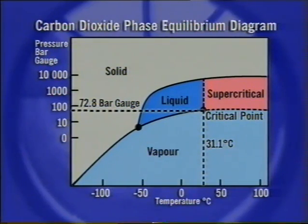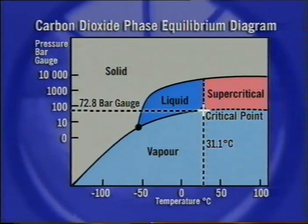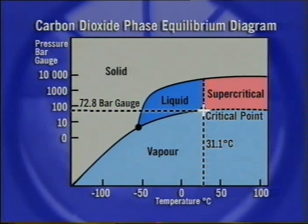The critical point is the combination of pressure and temperature at which the densities of liquid and vapor are equal. Consequently, the distinction between these phases disappears and only one phase — the supercritical — exists.